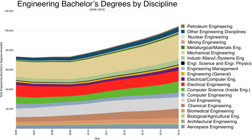These universities also award a Master of Engineering degree designed for engineers already involved in working life with at least two years of professional experience. In France, the engineering degree is mainly delivered by Grandes Écoles d'Ingénieurs upon completion of three years of master's studies.